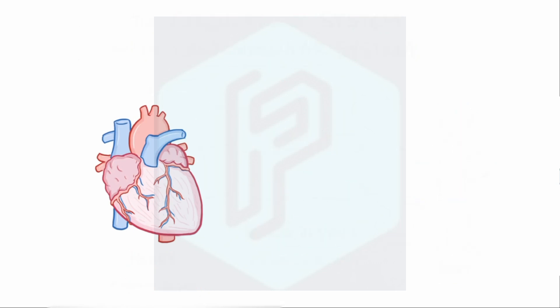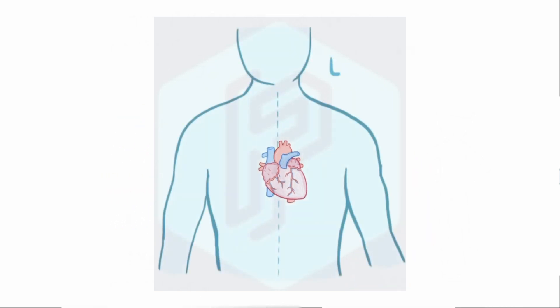The heart itself is about the size of a person's fist, which makes sense - a bigger person has a bigger fist and therefore a bigger heart. It's shaped like a cone and sits slightly shifted over to the left side in the mediastinum, which is in the middle of the chest cavity or thorax.